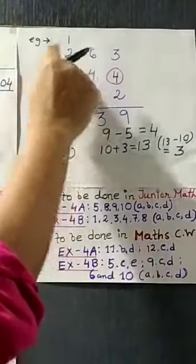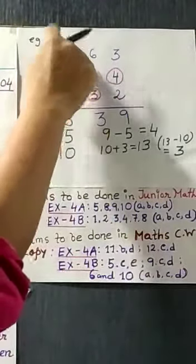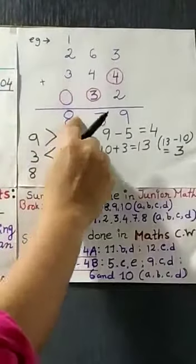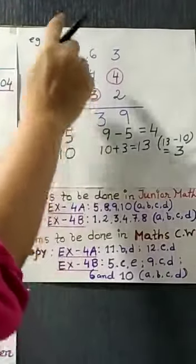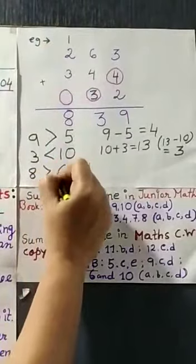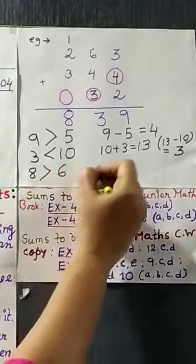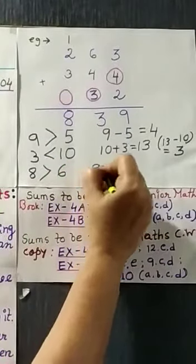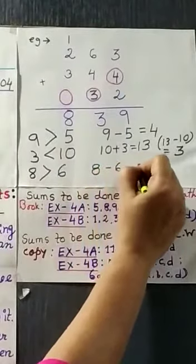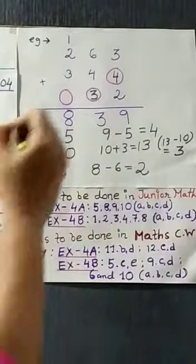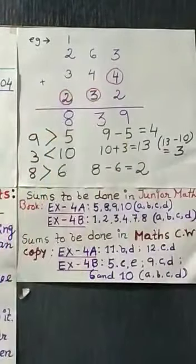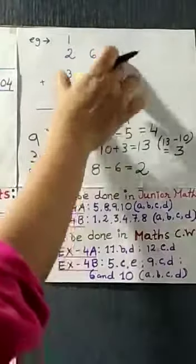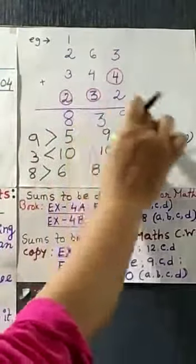Now, 3 plus 2 is 5. 5 plus 1 is 6. And, here it is 8. 8 is bigger than 6. 8 is bigger than 6. So, here we do simple subtraction. That is 2. And, we will write 2 over here. And, now you can add. If you add, you will get this number as the result.